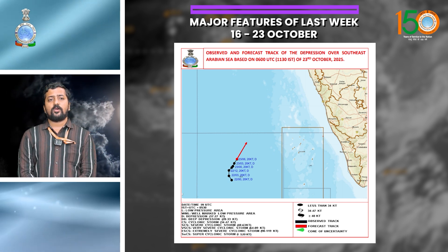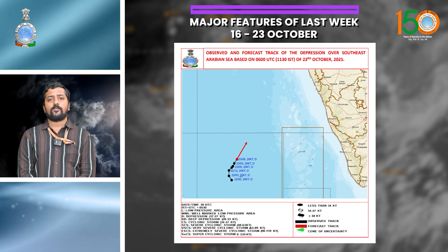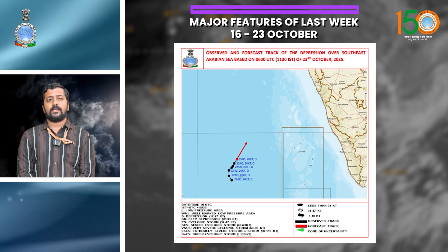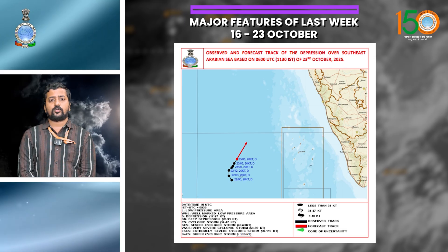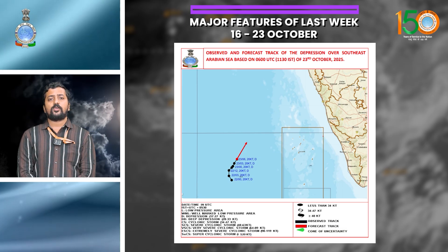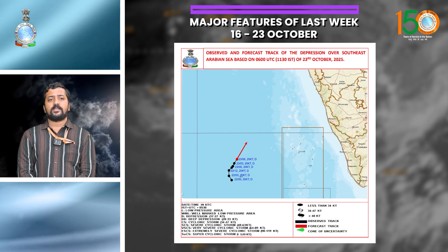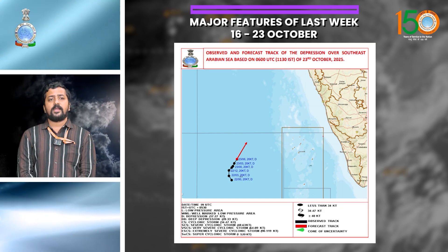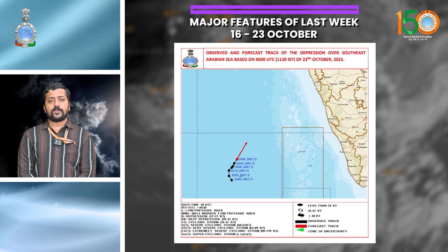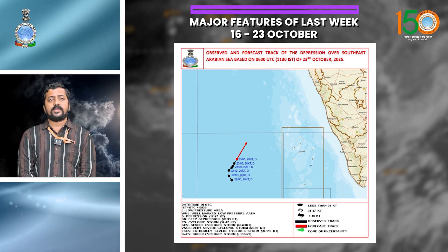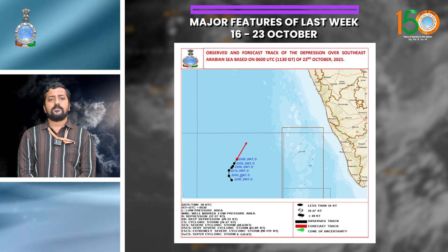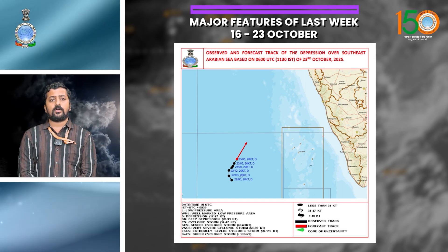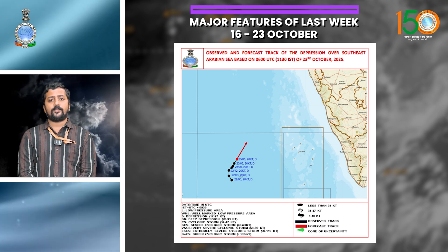Looking into the Bay of Bengal, a low pressure area had formed over the Bay of Bengal, specifically over southwestern parts of the bay around 21st of October, intensifying into a well-marked low pressure area around 3 UTC of the same day. It moved northwestwards over southwest Bay of Bengal around 22nd October. This system travelled northwestwards across Tamil Nadu, Puducherry area and South Andhra Pradesh coast during the period.